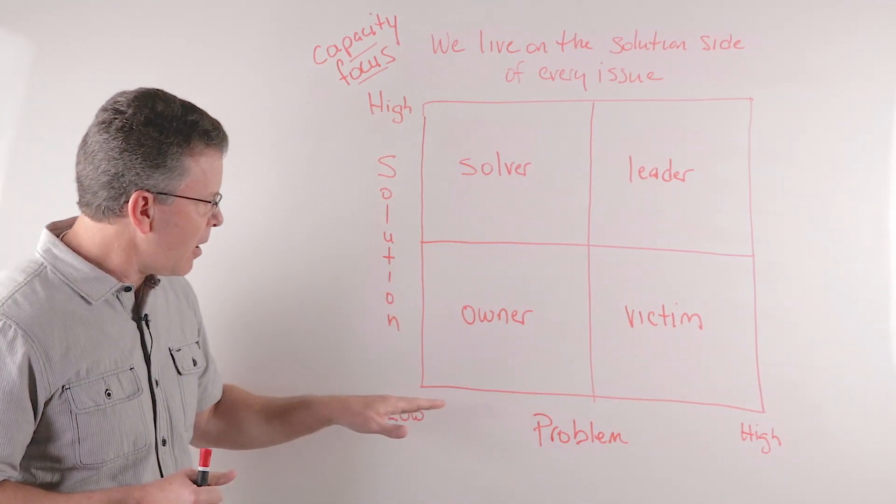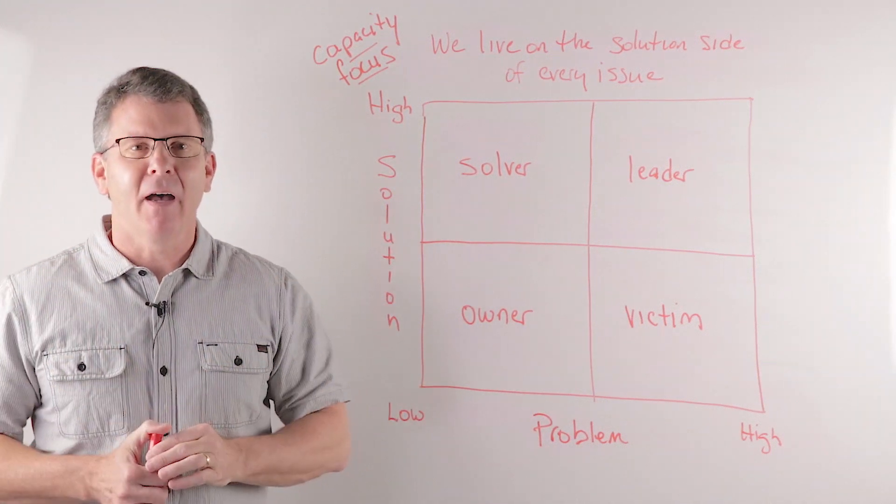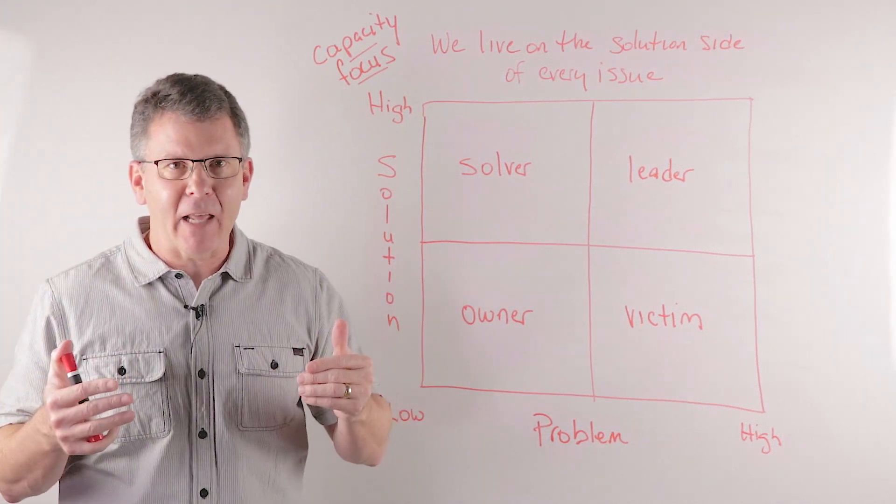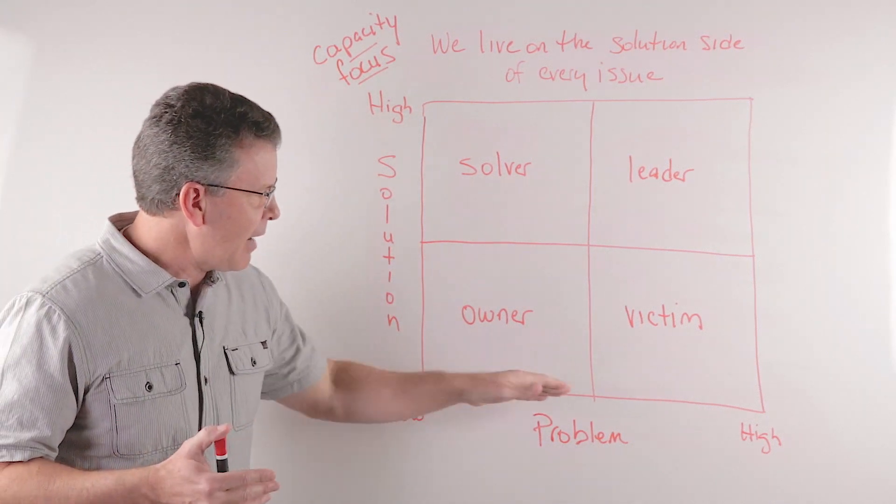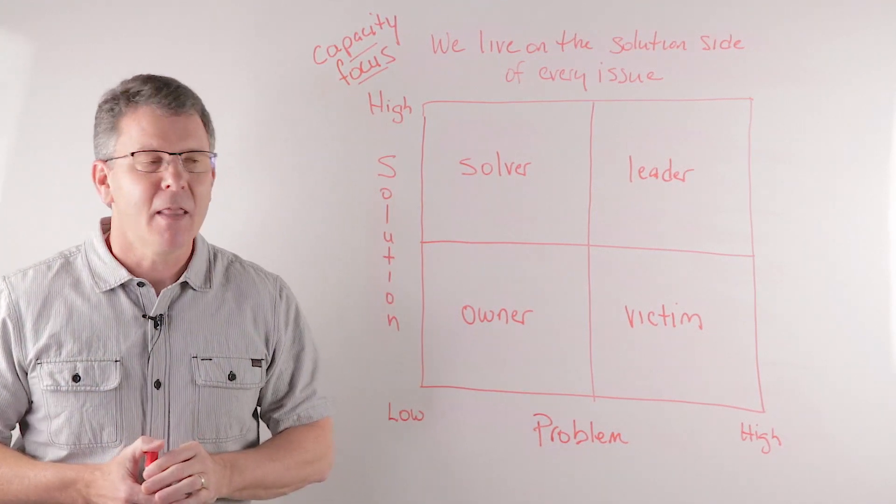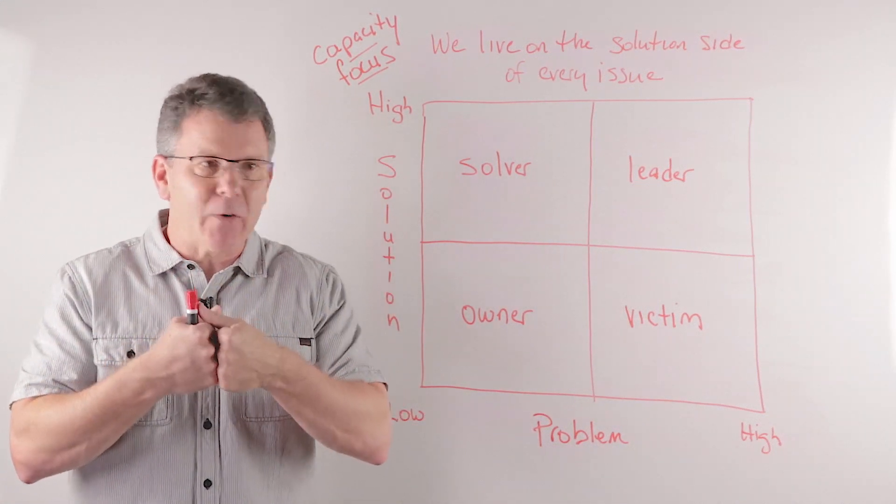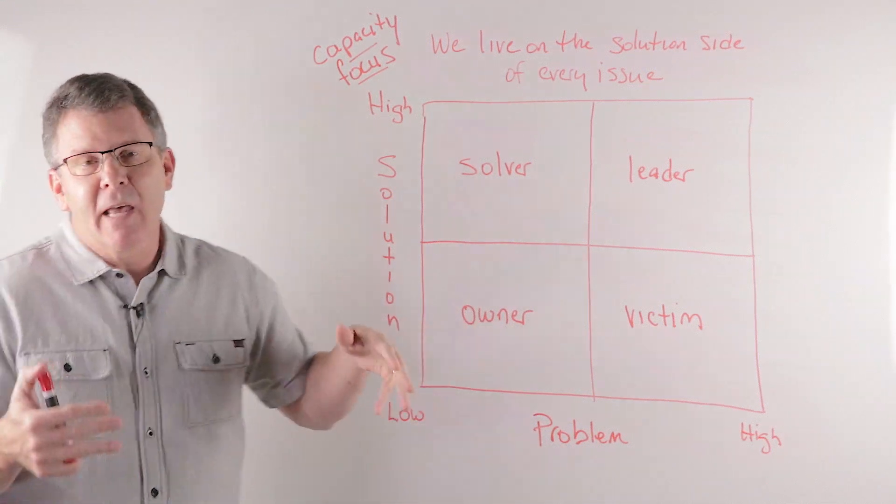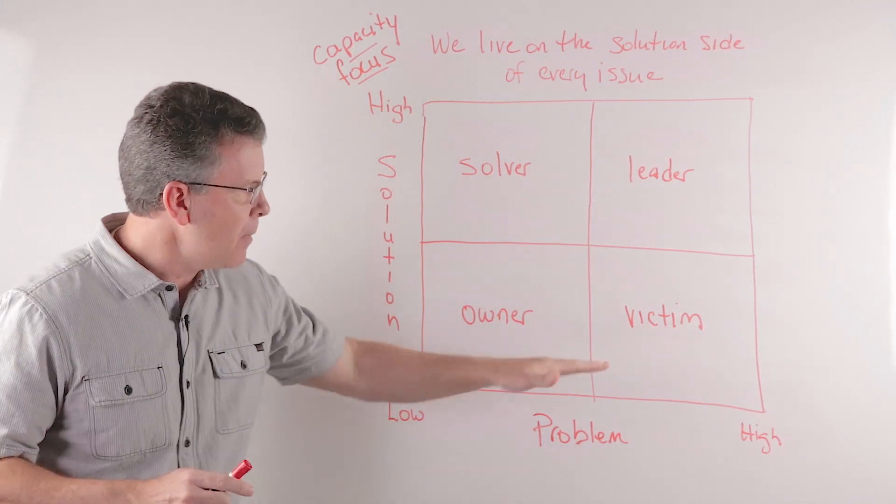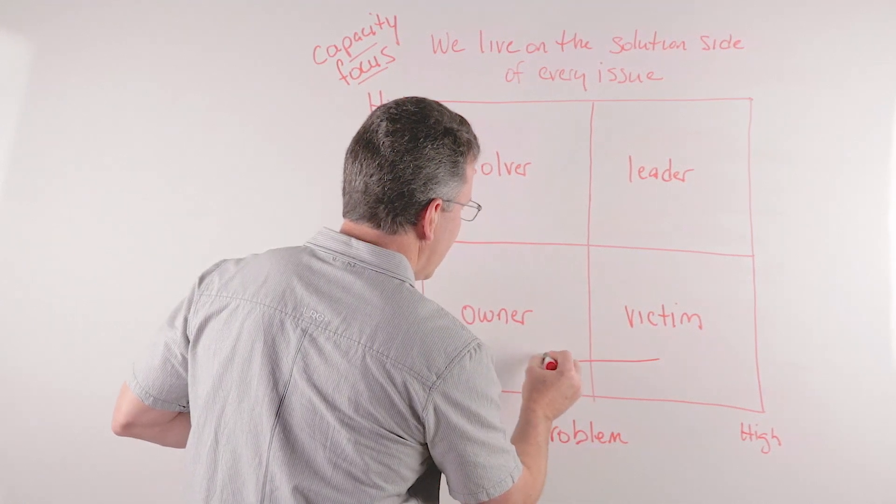And there are other people that see the problems, but their solution-sidedness matches up with the size of the problems. They try to figure it out. They've got a small problem, but they're responsible for it, and so they become owners. They may not have high capacity for solving, but the problems and the responsibility match together. They ask, what's my part in this and how can I help resolve the problem? They're moving from being victims to becoming owners.